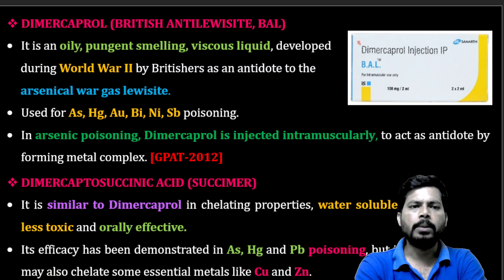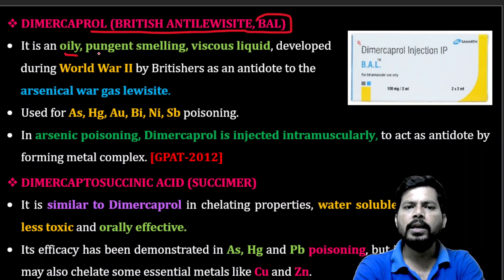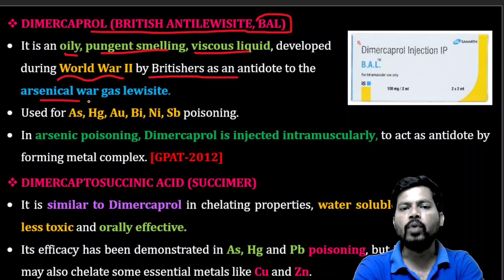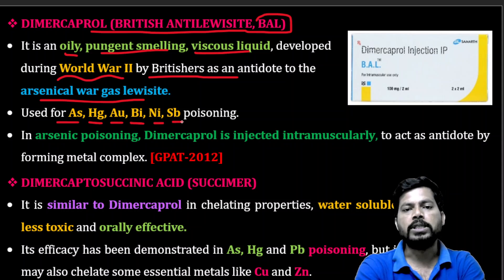Now let's discuss individual antidotes in detail. Dimercaprol, also known as British Anti-Lewisite, is an oily, pungent-smelling, viscous liquid developed during World War II by the British as an antidote to the arsenical war gas Lewisite. It is used as an antidote for poisoning by arsenic, mercury, gold, bismuth, nickel, and antimony.